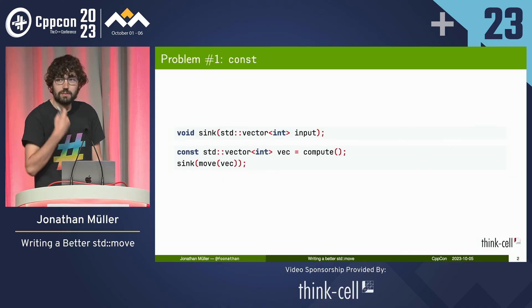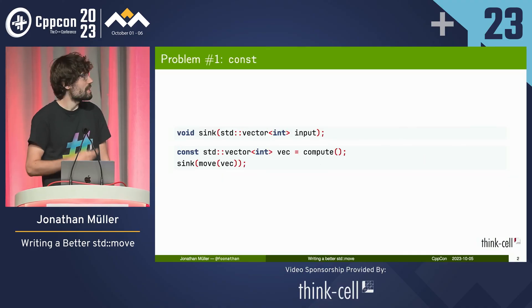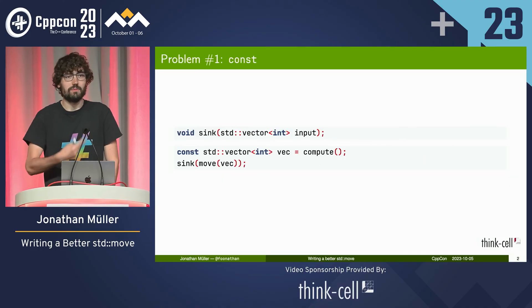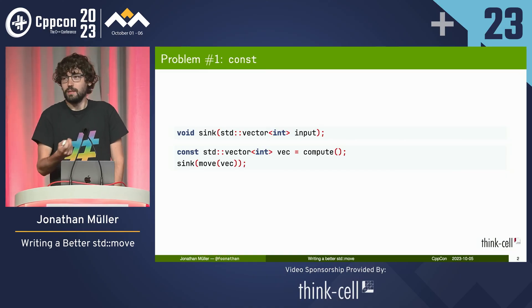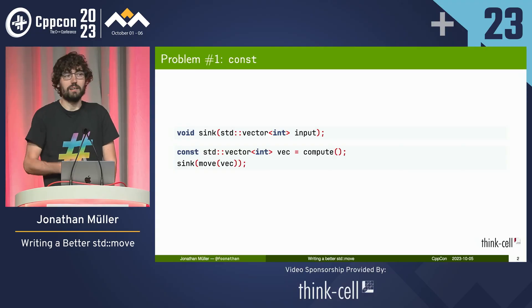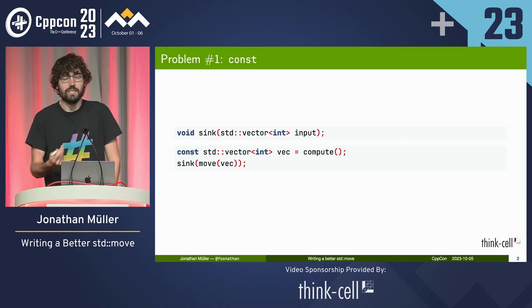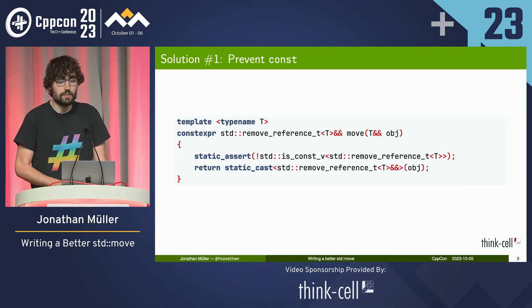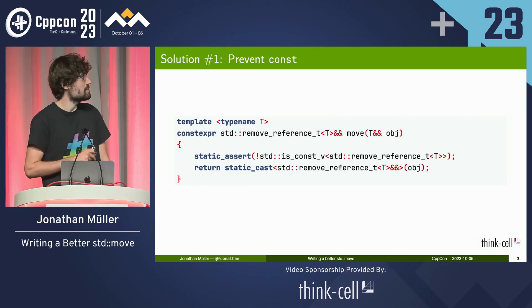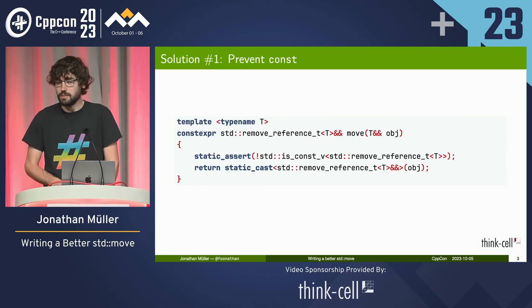The first problem is this one. We've got a function that is some_sync, takes a vector by value, and then we've got a vector and we move that in. What's wrong with that? This copies the vector because the move creates a const R-value reference. And const R-value references are not really a useful type — we don't want them. So we want to prevent that by adding a static assert in the move implementation that the thing you're passing in should not be const.